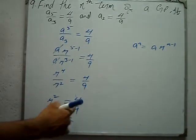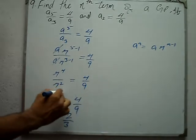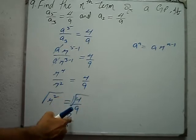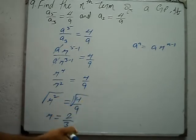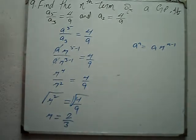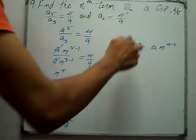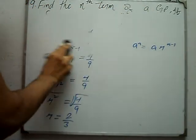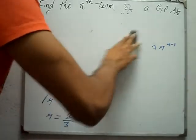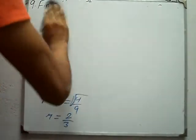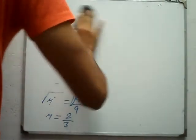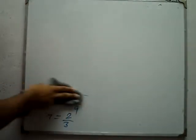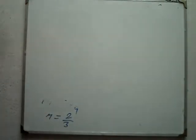So R is found by taking the square root. The square root of 4 is 2, and the square root of 9 is 3. Now we find R equals 2 over 3.